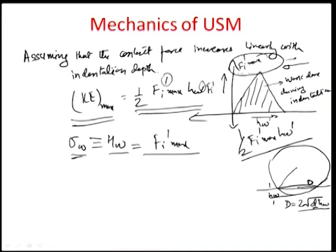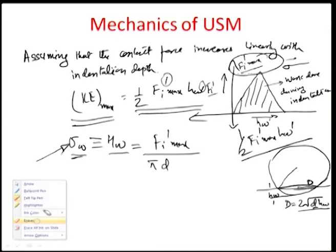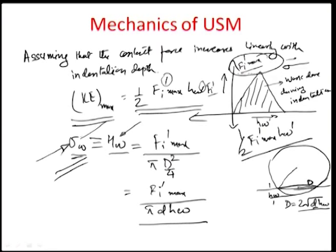Therefore, the force per unit area from f_i_dash_max, divided by the area pi D^2/4 or equivalently pi d h_w, must equal the hardness of the surface or flow stress of the surface — the condition for the grain to actually produce deformation on the surface.